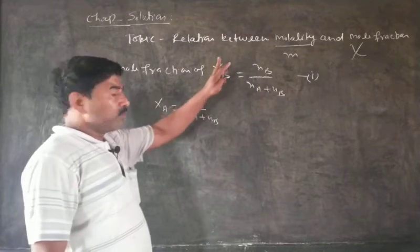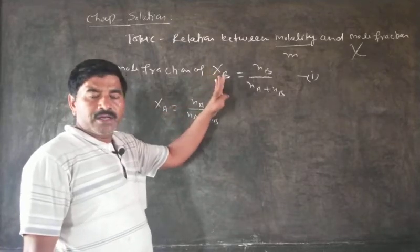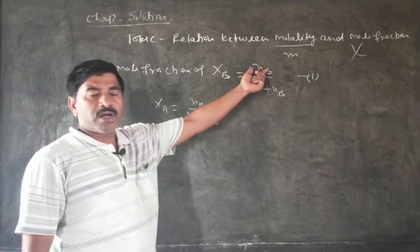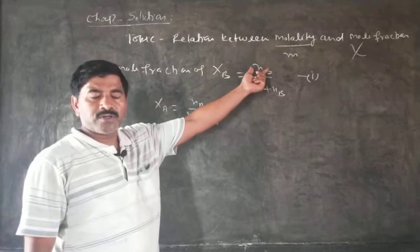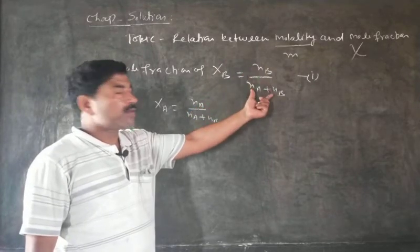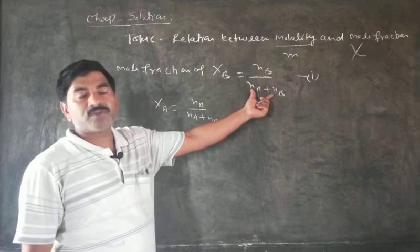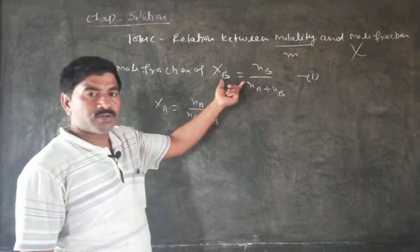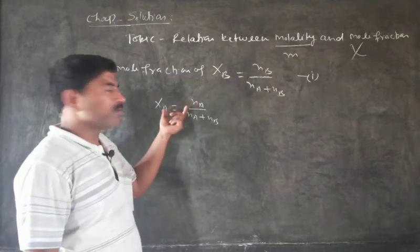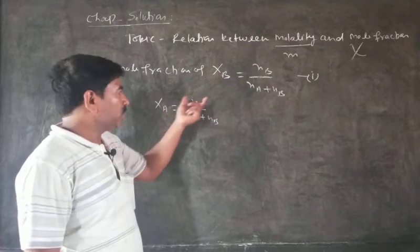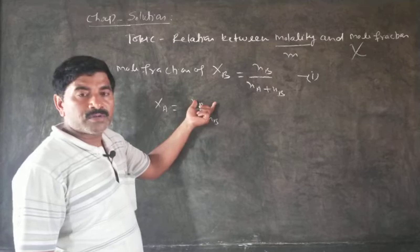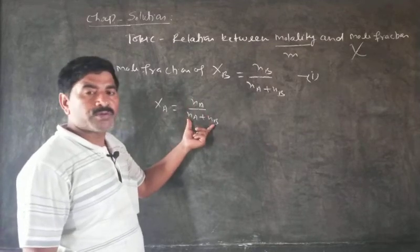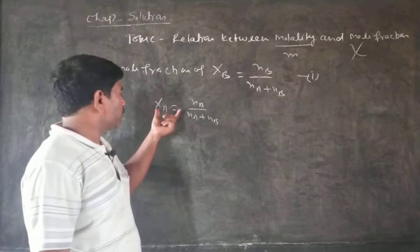The mole fraction of solute is defined as the ratio of the number of moles of solute to the total number of moles, known as mole fraction of solute. Similarly, mole fraction of solvent is the ratio of moles of solvent to the total number of moles.